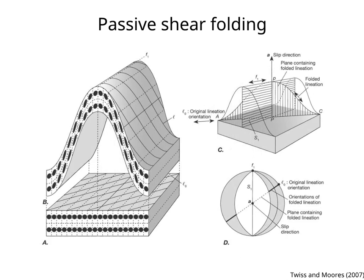This figure shows the strain on the profile view and surface of a fold formed by passive shear folding. In this case, the slip vectors are parallel to the axial surface of the fold. An original lineation, L0, is folded to a lineation, L.